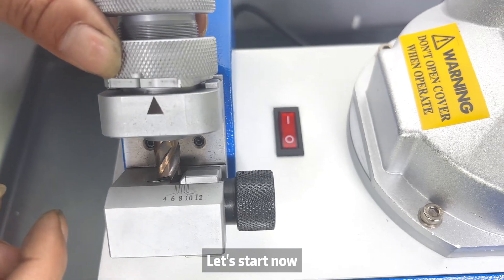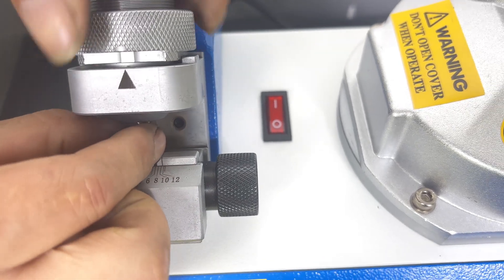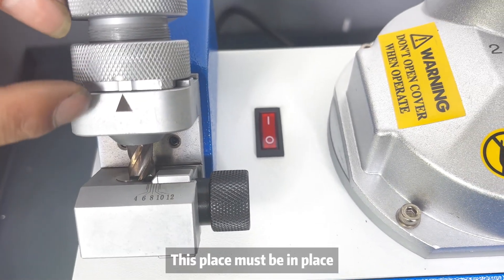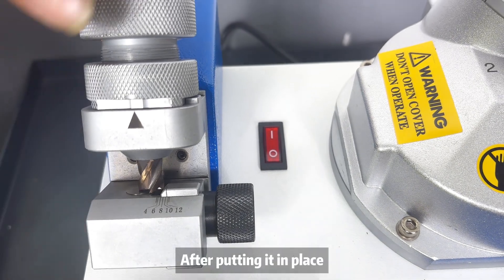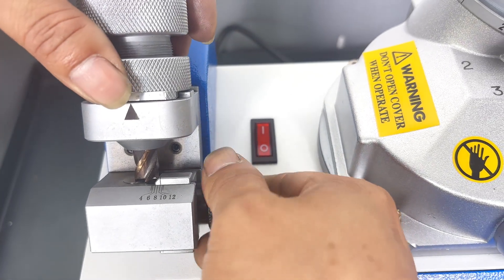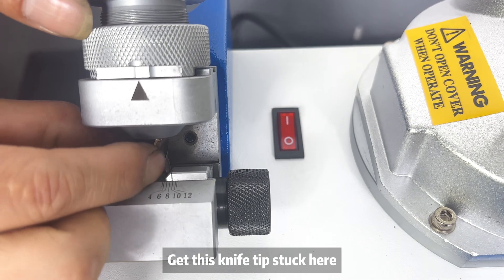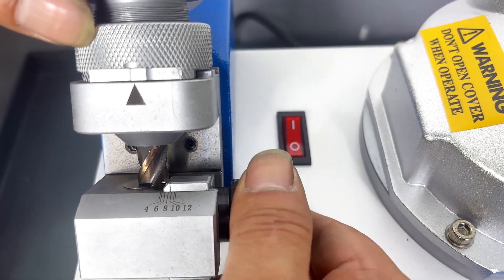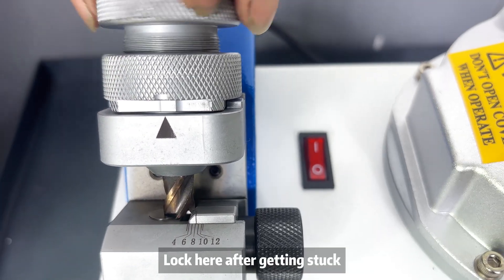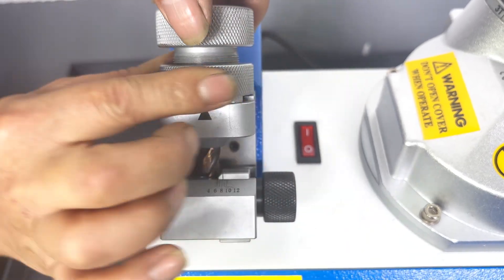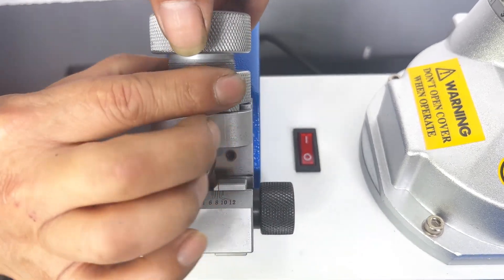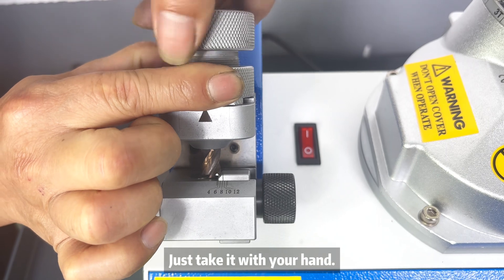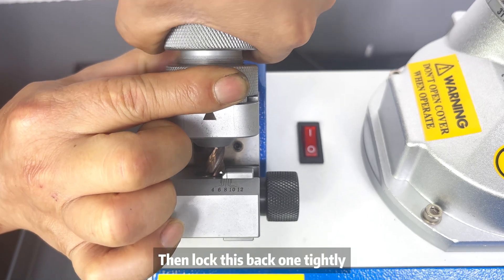Let's start now. This place must be in place. After putting it in place, get this knife tape stuck here. Lock here after getting stuck. Don't wake him up, just take it with your hand. Then lock this back one tightly.